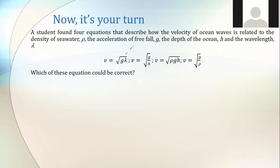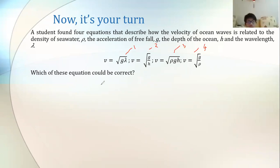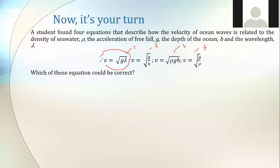So — the first equation, second equation, third equation, fourth equation — which equation is homogeneous? The first one. On the left you get meter per second, and on the right you also get meter per second. The other three formulas are not homogeneous. Gravity's unit is m·s⁻², density's unit is kg per meter cubed — so those three don't balance. The answer is the first one — it's homogeneous.